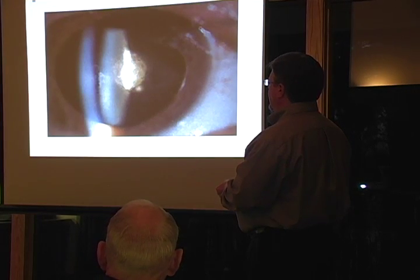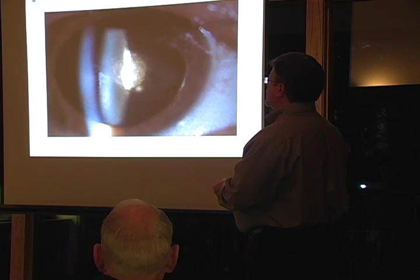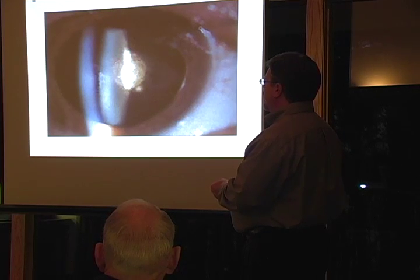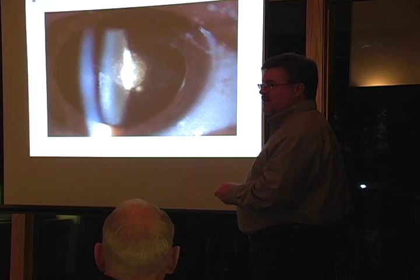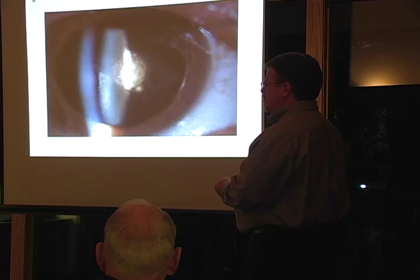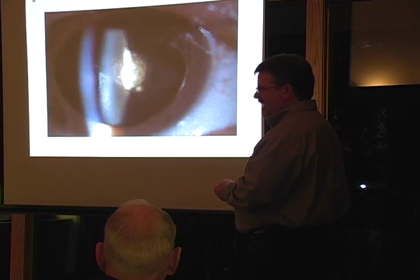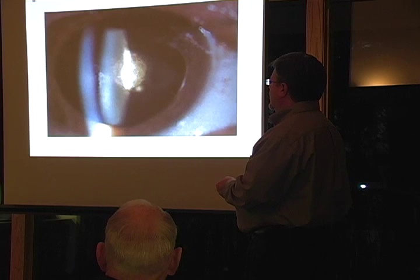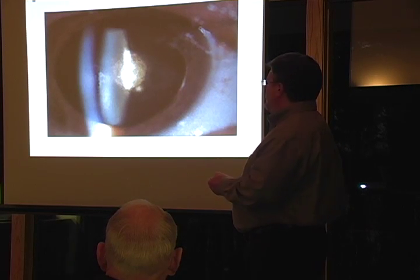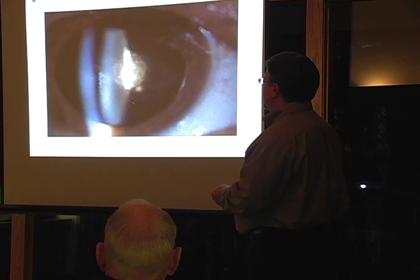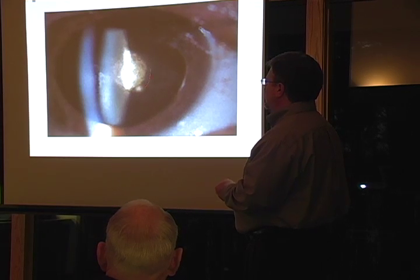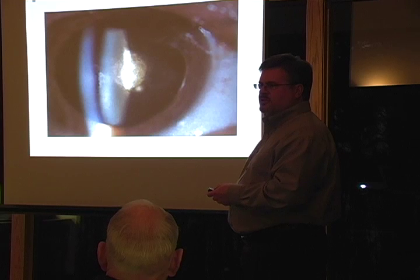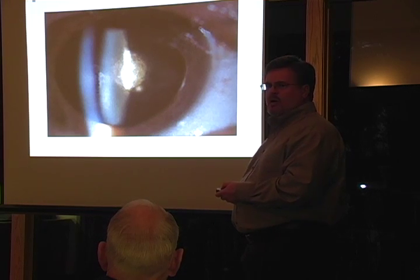This is a posterior subcapsular cataract — located in the back of the lens of the eye. Those can be very visually significant. Because of the physics of light, this particular type of cataract can cause really blurry vision. People can have a mostly clear lens and just have that spot in the back, and they just can't see well. It's very blurry.